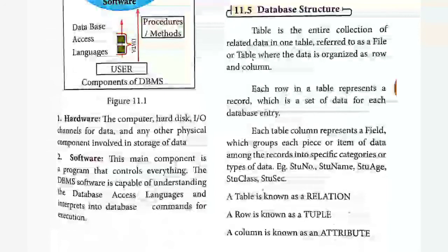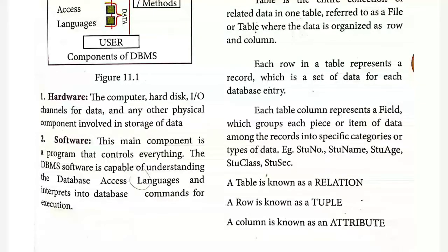Each row in the database is known as a record, and each column represents a field. A field groups each piece of data among the records into specific categories of data types. This column categorizes the record based on the attribute. For example, student name, student number, student age, student class, and student section are all the attributes or fields that categorize a record. Important terminology: a table is known as a relation, a row is known as a tuple, and a column is known as an attribute. Please note these three — they can be asked as one-mark questions.